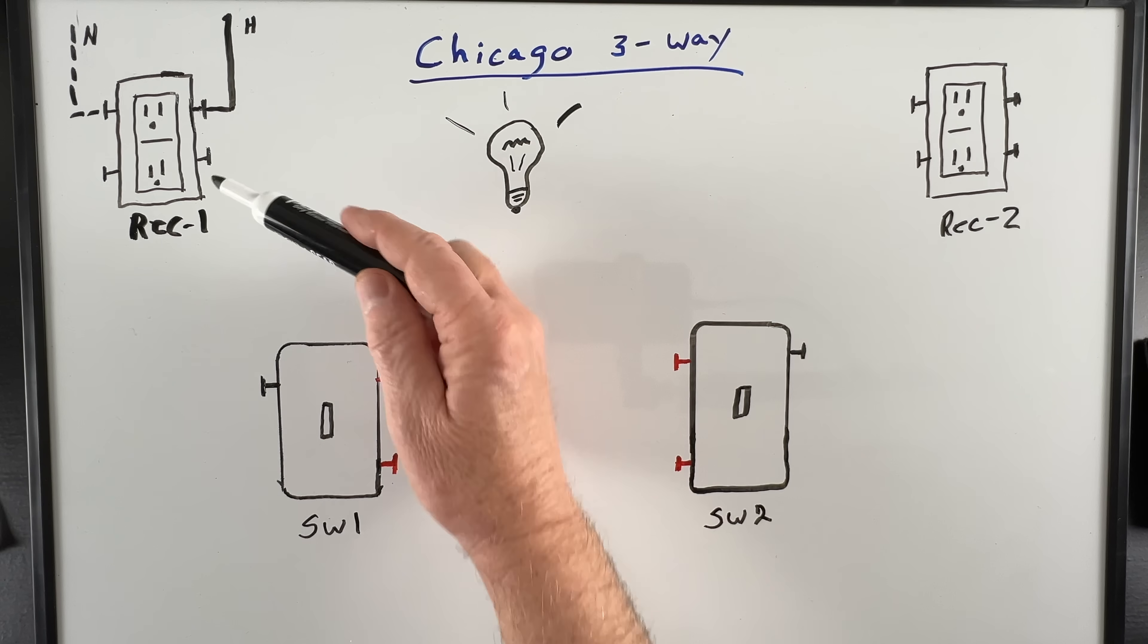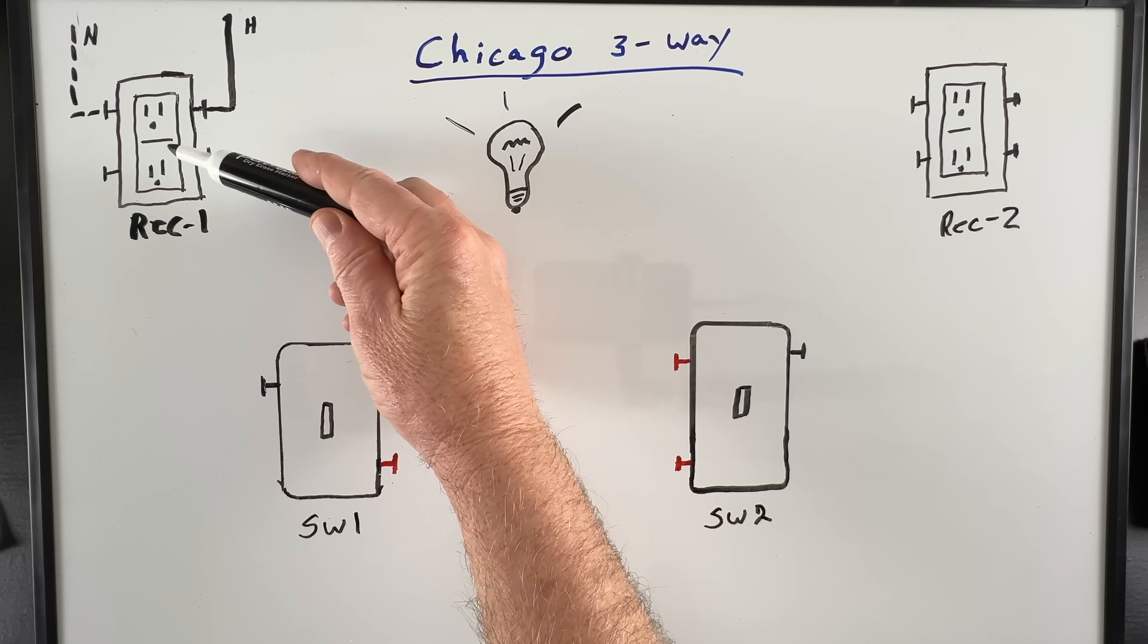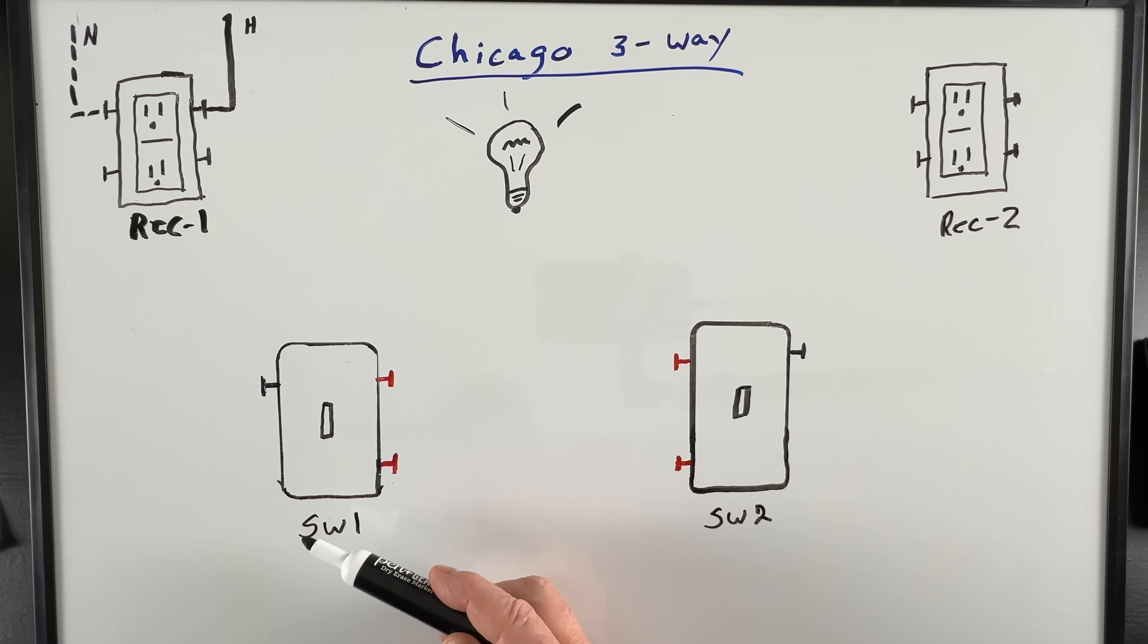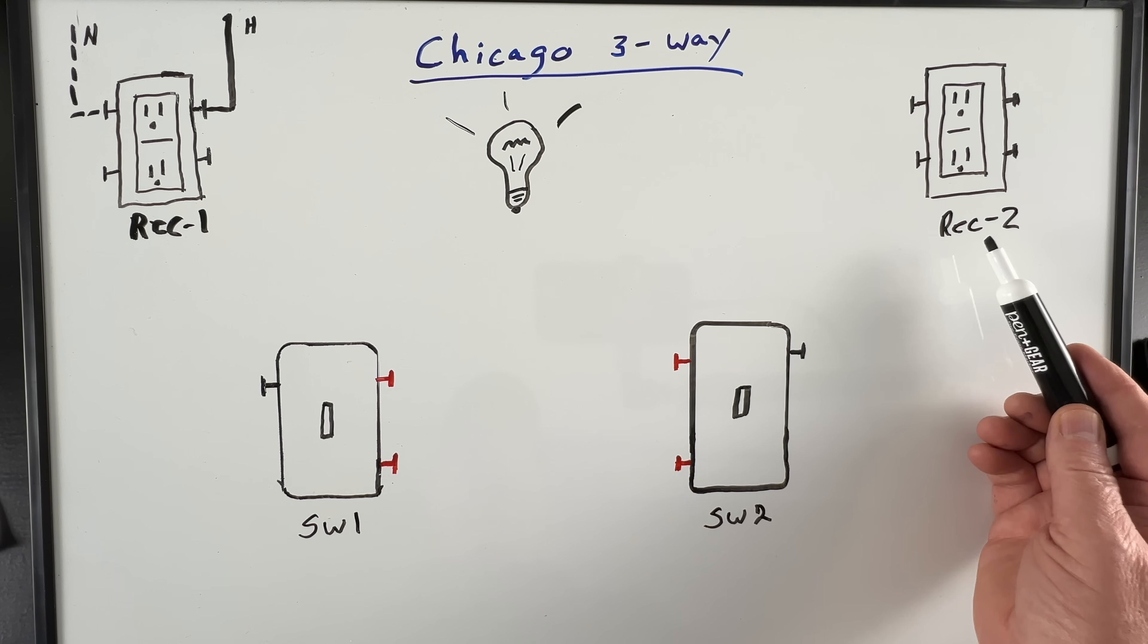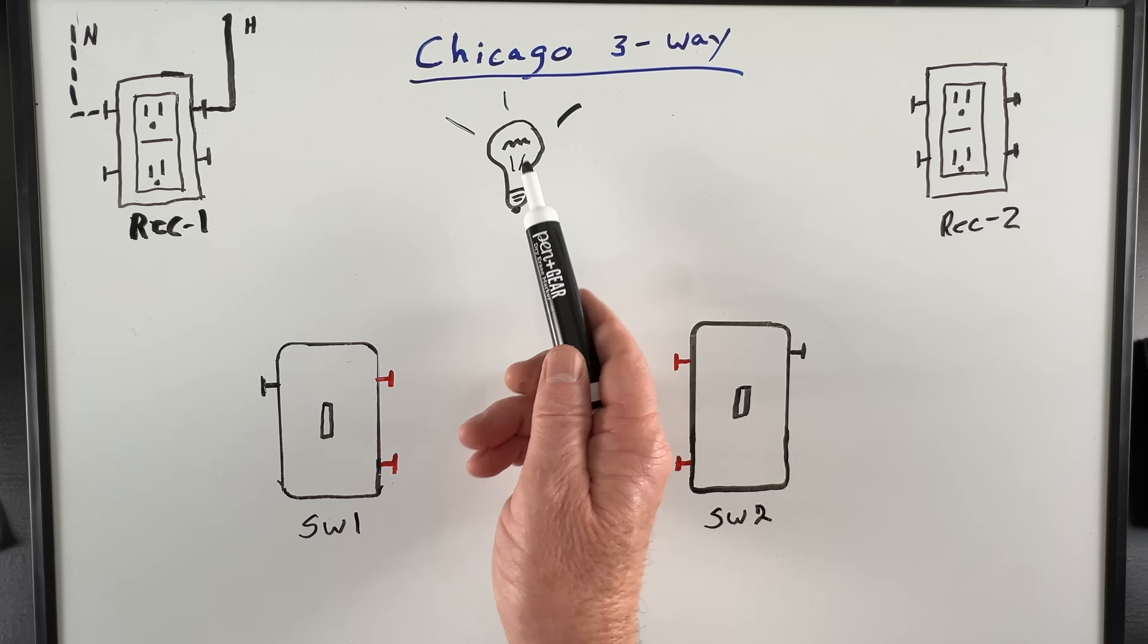We're going to carry two wires, hot and neutral, from receptacle one to three-way switch one, onto three-way switch two, and then up to receptacle number two. And of course, each switch will control our light.